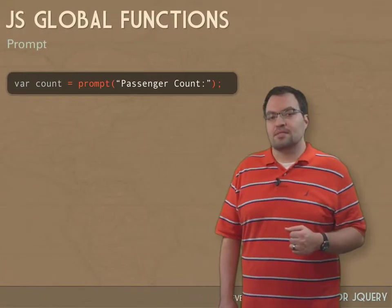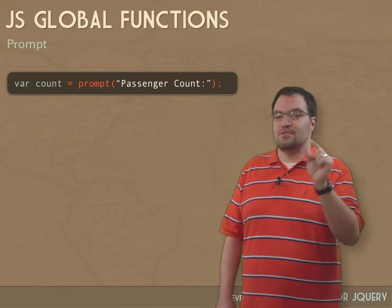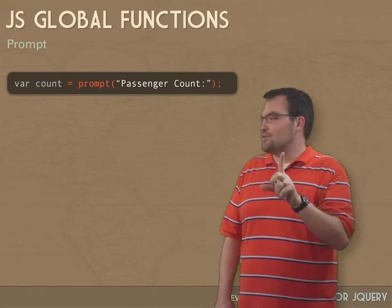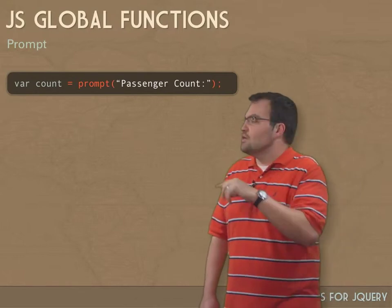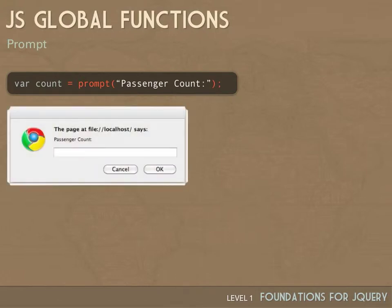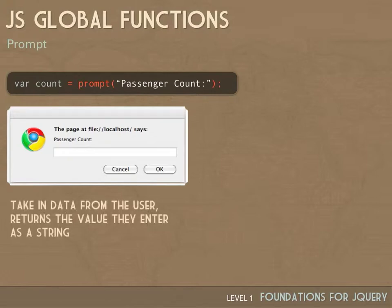Third, there's prompt. We've seen alert that gives you a dialog with OK, and confirm with cancel and OK. With prompt, you pass in a message — here I'm passing in 'passenger count'. It pops up a box with the message and a text box where the user can enter information. Whatever they type in, you get back as a string — that's the return value of the function. Here I'm storing that into the variable named count.